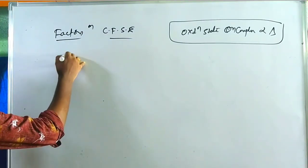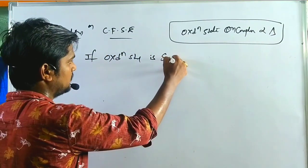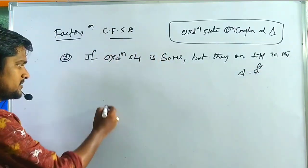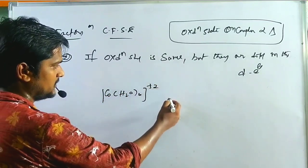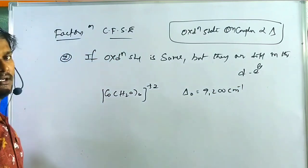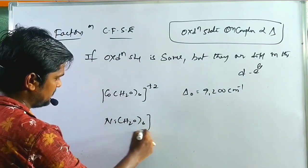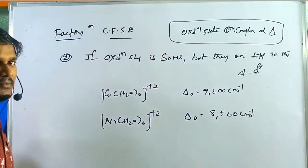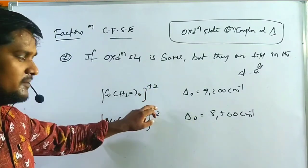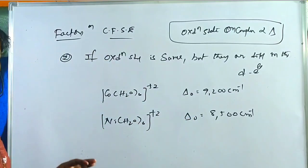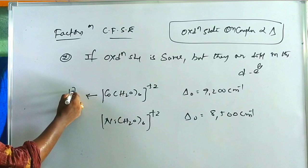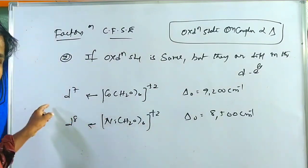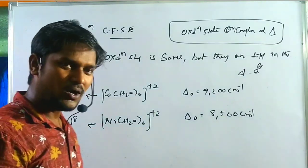The second factor: when the oxidation state is the same but the complexes differ in d electrons. [Co(H₂O)₆]²⁺ has delta O of 9,200 cm⁻¹, while [Ni(H₂O)₆]²⁺ has delta O of approximately 8,500 cm⁻¹. Both have the same oxidation state but differ in delta values. Co²⁺ is d⁷ and Ni²⁺ is d⁸, so as d electrons increase, crystal field splitting decreases.